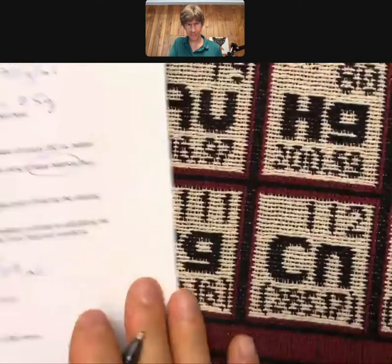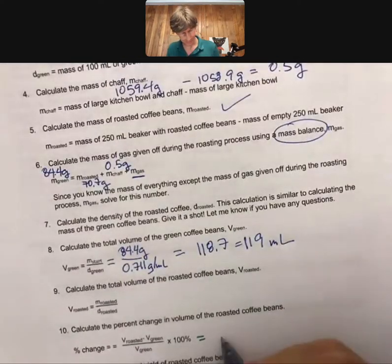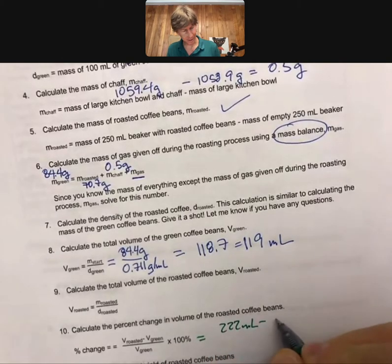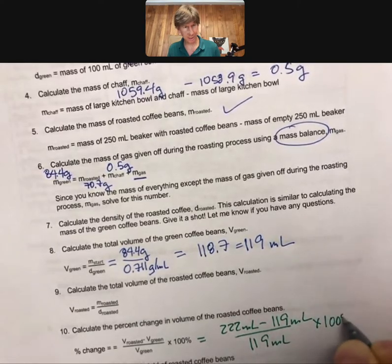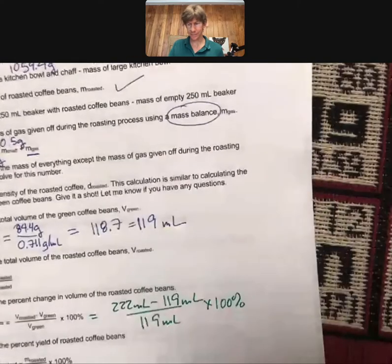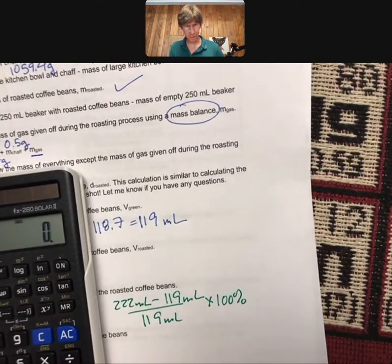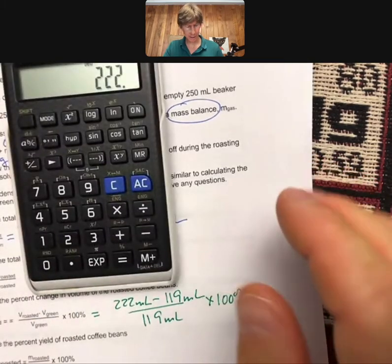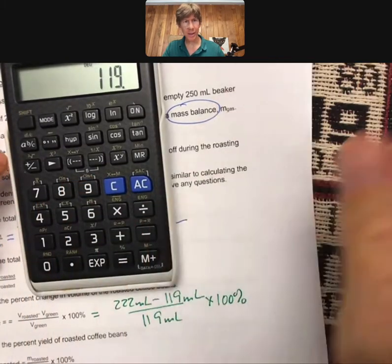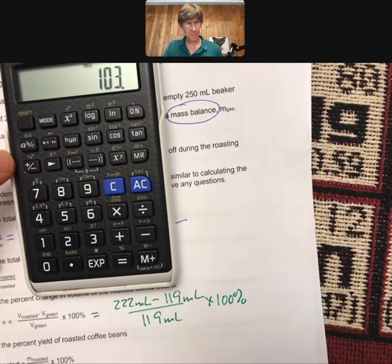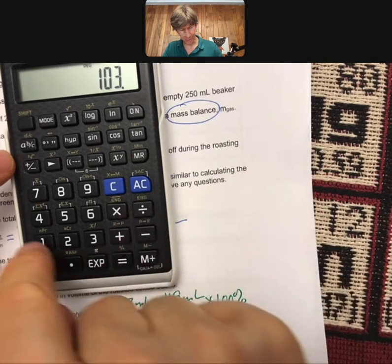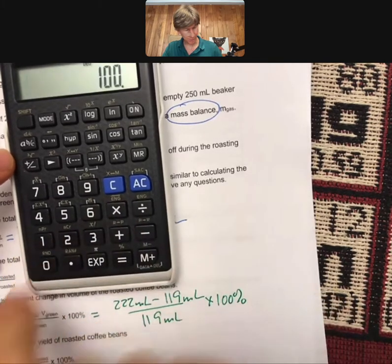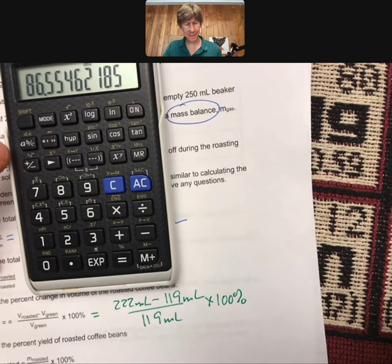So it's going to be 222 milliliters minus 119 milliliters over 119 milliliters times 100%. Make sure you do the 222 minus the 119, then hit the equal sign, and then divide by the 119 times 100%. 86, let's go 87% change. We'll go to two sig figs this time.